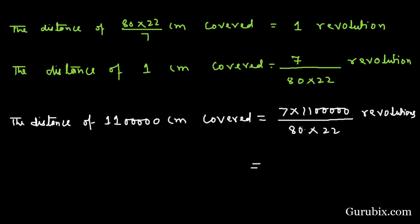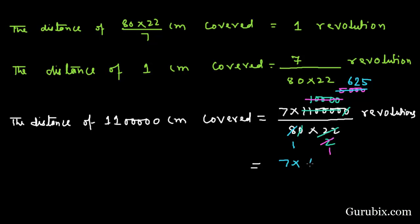Now we shall further solve it. The zeros cancel out, then we cancel 11 to get 2, and this cancels with 11 as well. Then we have 10,000. Two times 5,000 is 10,000, and 8 times 625 is equal to 5,000. So we have 7 times 625 revolutions, which equals 4,375 revolutions.